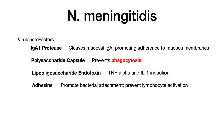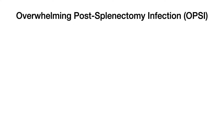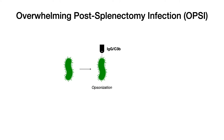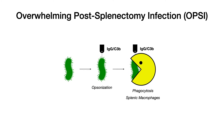Specifically, you want to know that the polysaccharide capsule prevents phagocytosis, and in certain bacteria like Neisseria meningitidis you need to know something called overwhelming post-splenectomy infection, sometimes referred to as OPSI. Under normal circumstances, when the body recognizes a bacteria it undergoes opsonization — part of the complement cascade — where a tag of either IgG or C3b is attached to the bacteria. Splenic macrophages then recognize that tag and go phagocytize the bacteria.